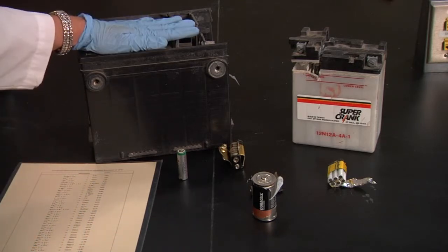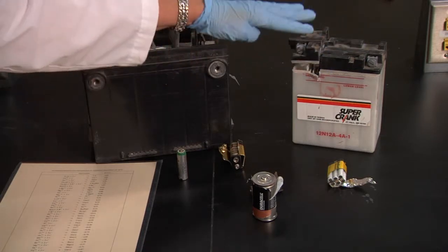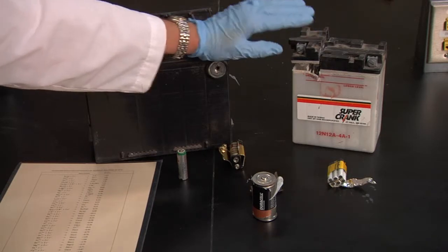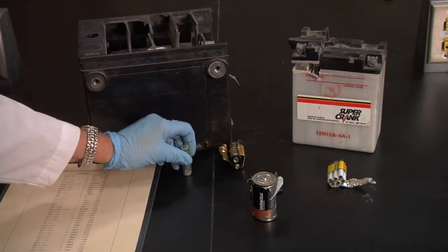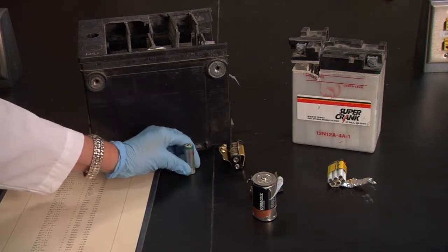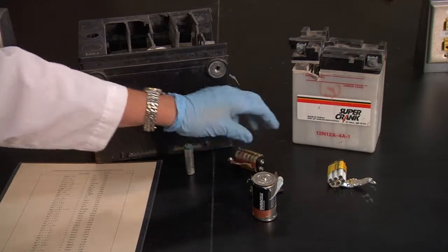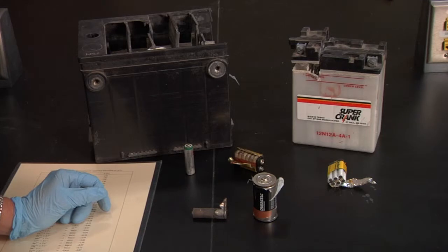We have a 12-volt car battery, a 12-volt battery for your motorcycle or lawnmower. We have one and a half volt that you probably have in your calculator or something like that. We have 9 volts, we have one and a half volts of a variety of different sizes.